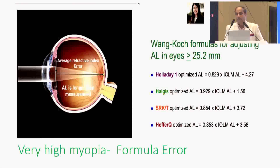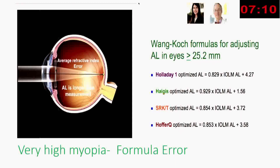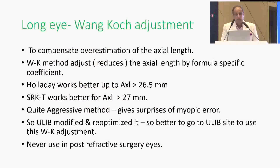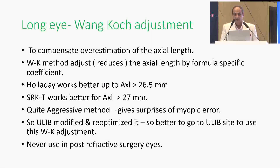The Wang-Koch adjustment for axial lengths in eyes more than 25.2 mm is actually very good, and formulas like Holladay, Haigis, SRK/T, and Hoffer Q were used. The Wang-Koch adjustment compensates for the overestimation of axial length by reducing it using a formula-specific coefficient. Holladay works better up to axial length of 26.5 mm; SRK/T works better for axial length more than 27 mm. These can give myopic surprise errors, so it is better to go to the ULIB site to use the Wang-Koch adjustment.